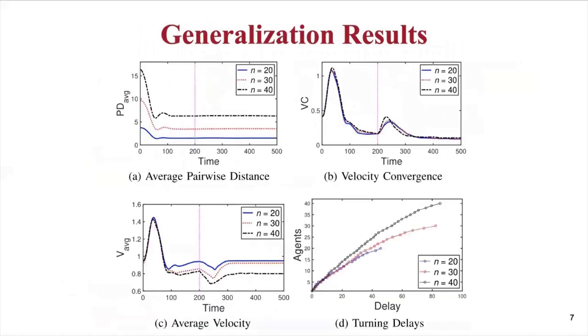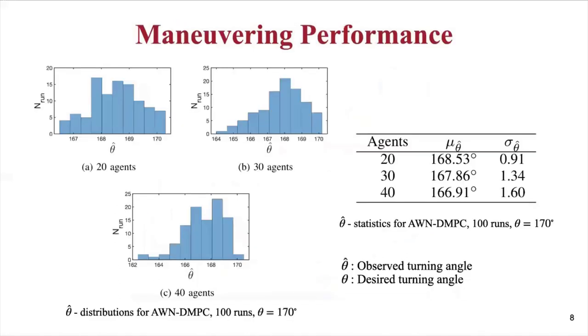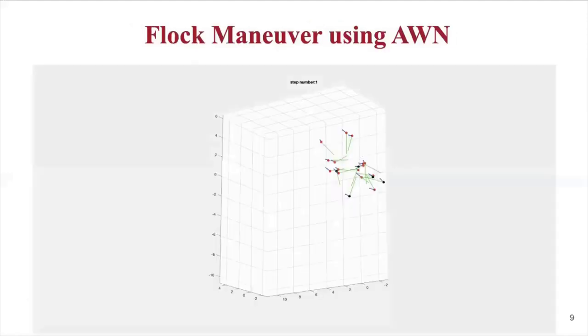Other results include the performance comparison with 20, 30, and 40 agents for the four metrics presented here. For all the cases, the pairwise distance and velocity convergence decreases gradually, as expected. The average flock velocity dips during the turn, which happens at time step 200, but they quickly recover, showing high-speed maneuvering. All the results here are averaged over 100 test runs. This shows the distribution of the observed turning angles. And as you can see, the observed turning angles are very close to the intended or the desired turning angle of 170 degrees.